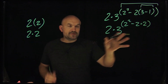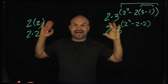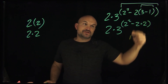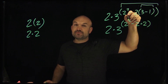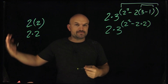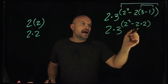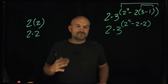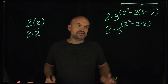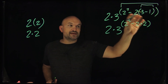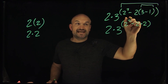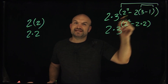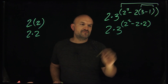Now we focus on simplifying the remaining parentheses. Inside we have two operations: two is being raised to the second power (an exponent), and we have multiplication of negative two times two. Following order of operations, before we get to multiplication, we exponentiate — we take two raised to the second power, which gives us four.